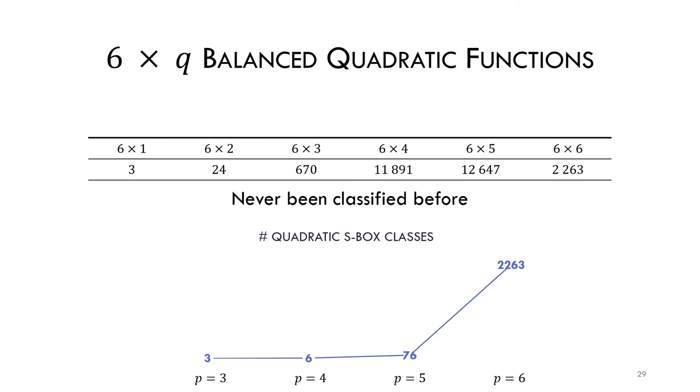The resulting number, 2,263 classes, is probably even higher than I expected. Apart from the 6x6 S-boxes, we also classified non-bijective balanced 6-bit Boolean functions. The representatives for all these classes and also the 5-bit Boolean functions can all be found online.